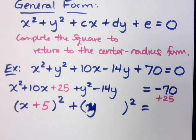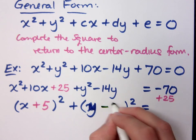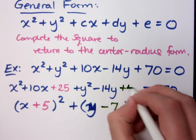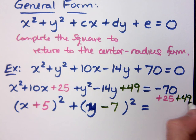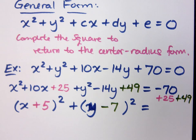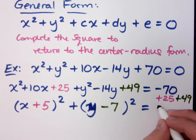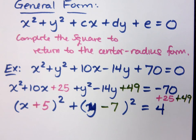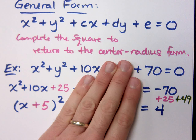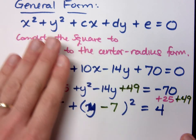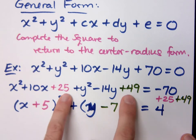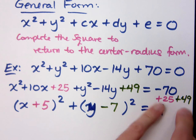What about the y? What am I going to get here? Half of negative 14 is negative 7. What's negative 7 squared? It's 49. But you have to add 49 over here as well. That's how we complete the square — we're completing two squares at the same time. So what's on the other side? I've got x plus 5 squared plus y minus 7 squared. That gives me 74 minus 70, which is 4. What I add on one side, I add on the other. That's why I'm using different colors — and I combine all of this to get 4.